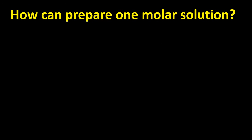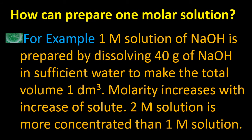Here we take the example of sodium hydroxide. Its formula is NaOH — sodium (Na), oxygen (O), and hydrogen (H). The molar mass of sodium hydroxide is 40 grams: sodium is 23, oxygen is 16, and hydrogen is 1. Adding them gives 40 grams. Always remember: for a one molar solution, we take the molar mass of the solute.